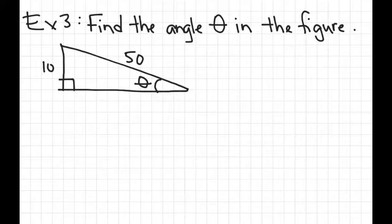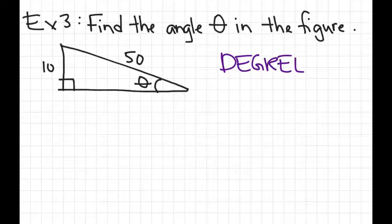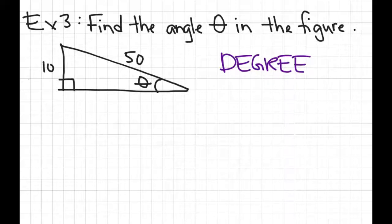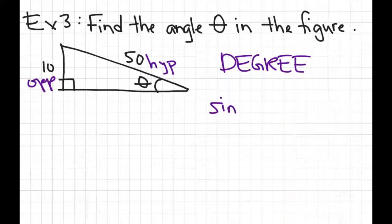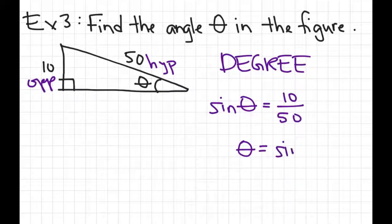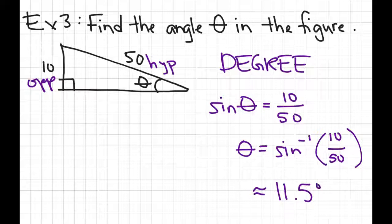Example 3 is something you should have done in both geometry and Algebra 2, so we'll go through it quickly. I'm going to find the measure of angle theta in the figure, and my recommendation is to be in degree mode. To find theta, I determine which trig function to use by labeling the sides relative to theta: 10 is the side opposite theta and 50 is the hypotenuse, so I should use sine. Sine of theta equals opposite over hypotenuse. Then to find theta, I use the inverse sine and plug it into my calculator to get approximately 11.5 degrees.